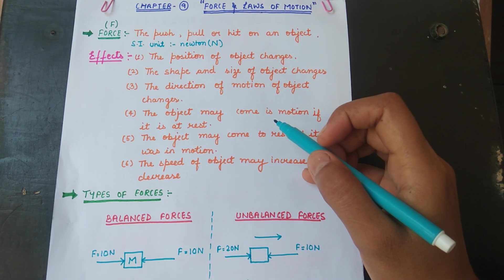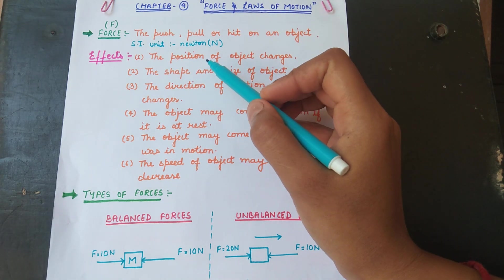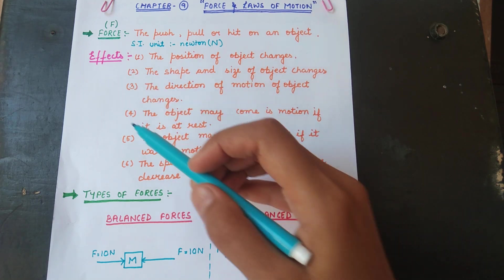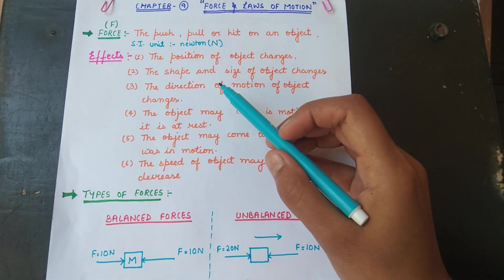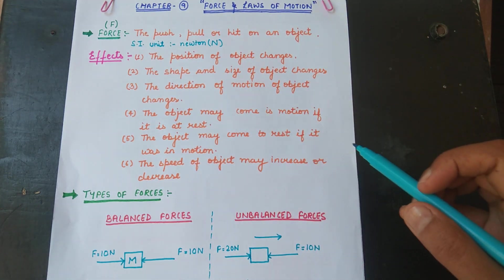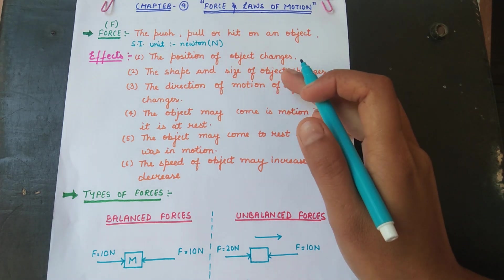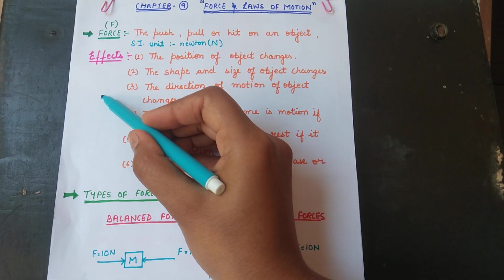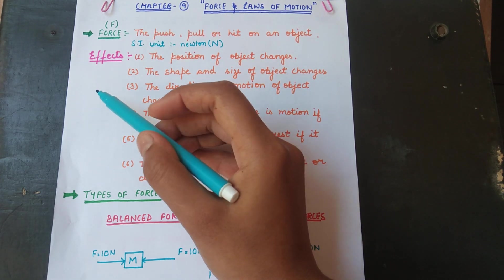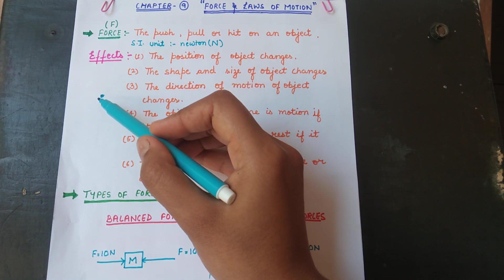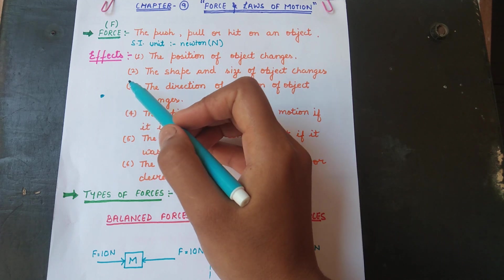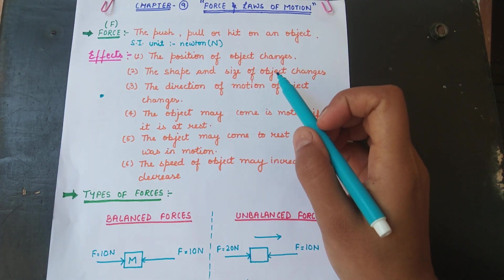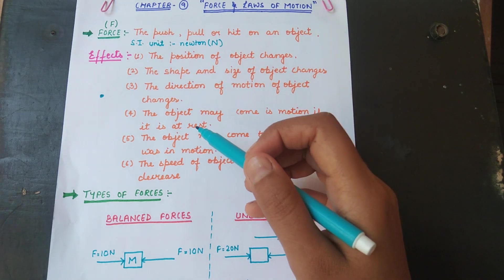The SI unit of force is Newton, with the symbol capital N. There are certain effects of force. If we apply force on an object, the position of the object changes. For example, if a stone is lying on the roadside and we hit it, its position changes.